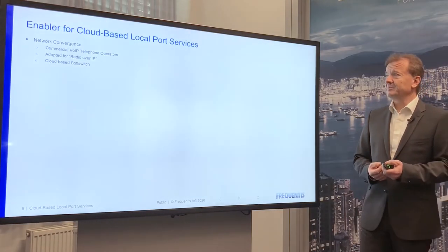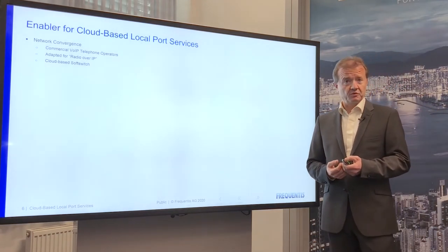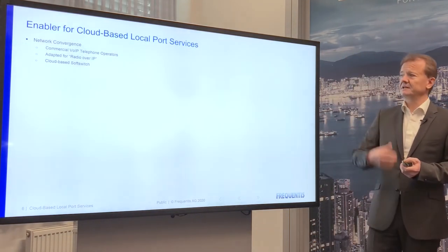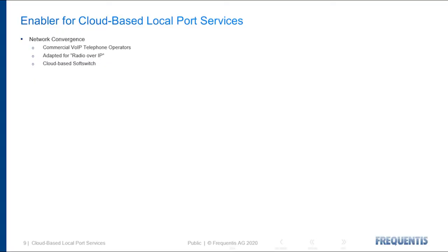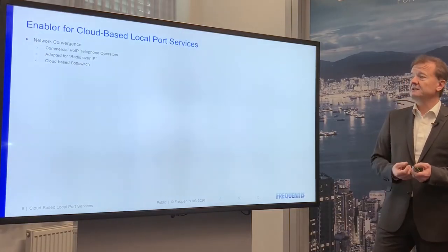What are the enablers of cloud-based local port services — to get rid of an on-premise IT system? First of all, we need network convergence. Telecom network operators did this years ago — they switched from circuit-switched telephony to soft-switch voice over IP based systems. We adapted this for VHF communication: we not only do voice over IP for telephony, but also radio over IP, applying the same technology.